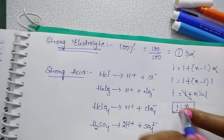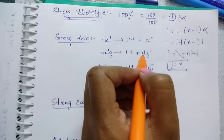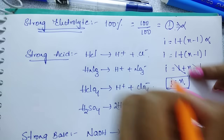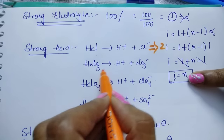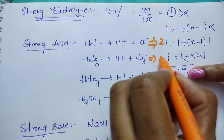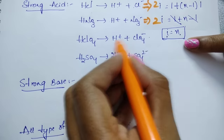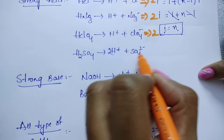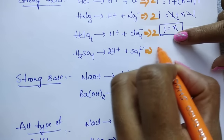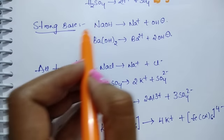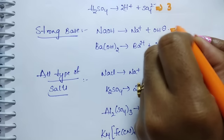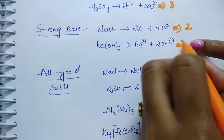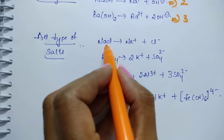For HCl → H⁺ + Cl⁻: N = 2, so I = 2. For HNO₃ → H⁺ + NO₃⁻: 2 ions, I = 2. For HClO₄ → H⁺ + ClO₄⁻: I = 2. For H₂SO₄ → 2H⁺ + SO₄²⁻: 3 ions, so I = 3. For NaOH → Na⁺ + OH⁻: N = 2, I = 2. For Ba(OH)₂ → Ba²⁺ + 2OH⁻: N = 3, so I = 3.